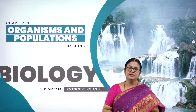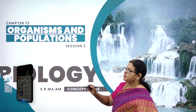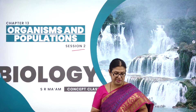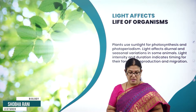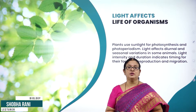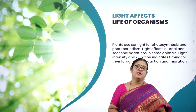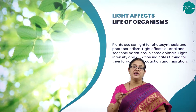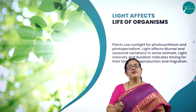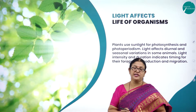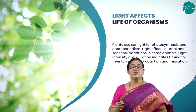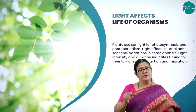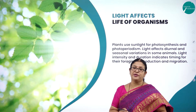Hello everyone, dear 2nd PUC students, welcome back to session 2 of this interesting chapter — chapter 13 called Organisms and Population. In the last session we dealt with four important ecological levels of biological organization: the organism, the population, the community, and the biome. We also learned about the definition of ecology: it's an interaction amongst organisms and between organisms and their physical environment, which is made up of both biotic and abiotic components.